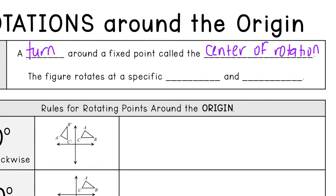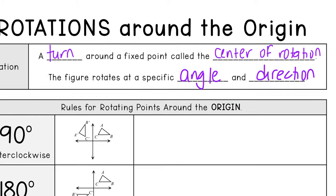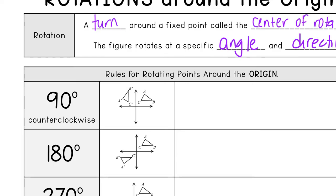So the figure is going to rotate at a specific angle and direction. For today, we're only going to talk about rotations that go around the origin, so around the middle of your graph. And we're only going to be going counterclockwise. So counterclockwise means that we're going to be turning to the left.